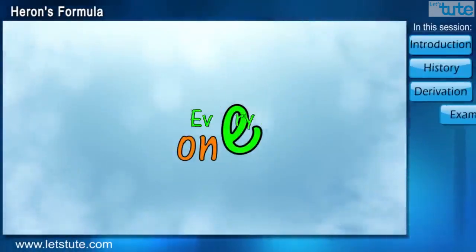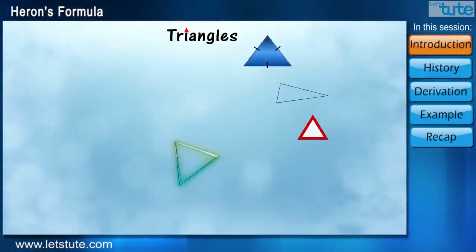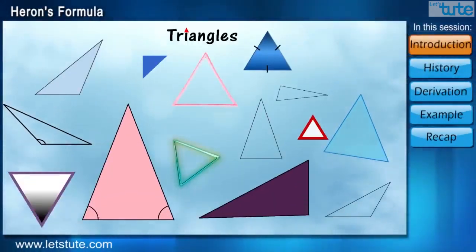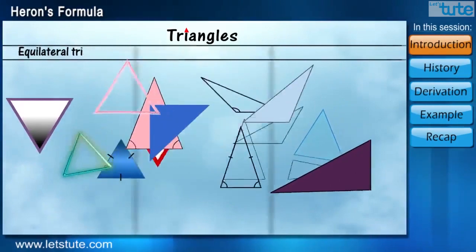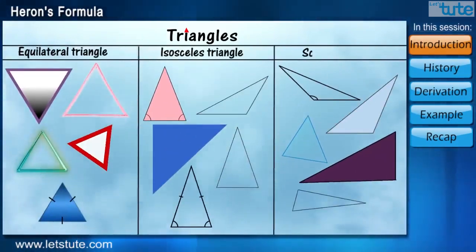Hi everyone, Triangles. Basically, there are three types of triangle: equilateral triangle, isosceles triangle and scalene triangle.